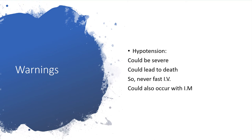Warnings: Hypotension here could be very severe and could actually lead to death. When we choose the intravenous route, we must give it very slowly — over almost 90 minutes to 2 hours — to prevent hypotension. Even choosing the intramuscular route will not rule out hypotension.